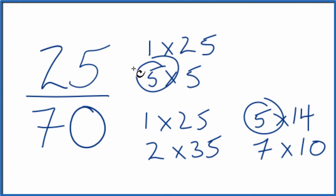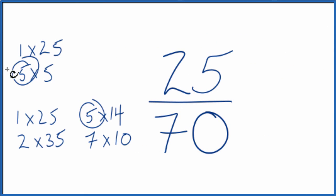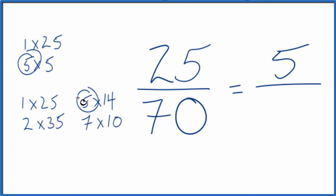So we'll divide 25 by 5 and then 70 by 5, and we'll have simplified the fraction 25 over 70. So 25 divided by 5, that gives us 5, and then 70 divided by 5 gives us 14.